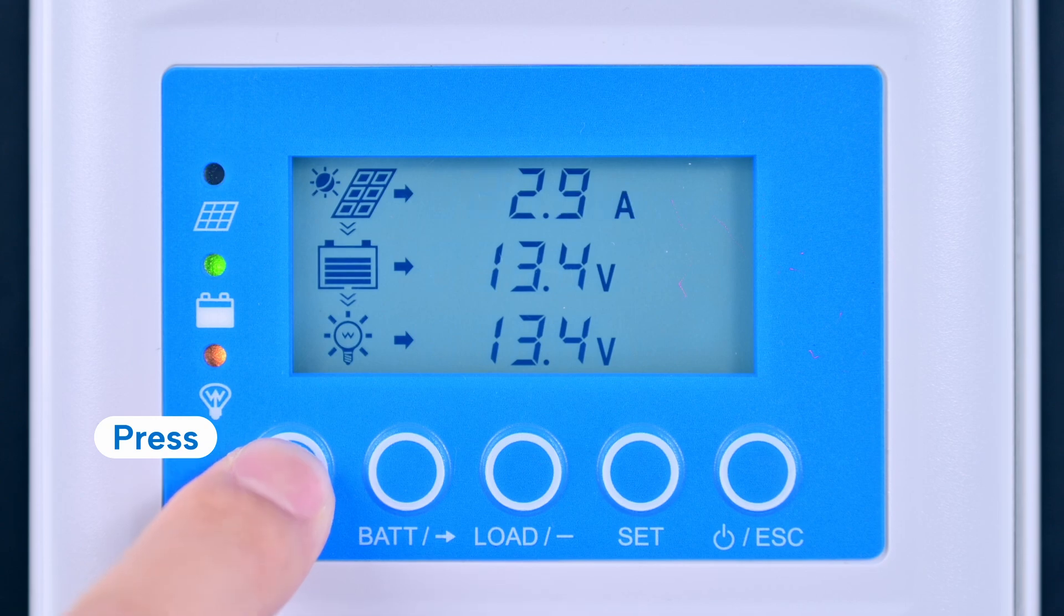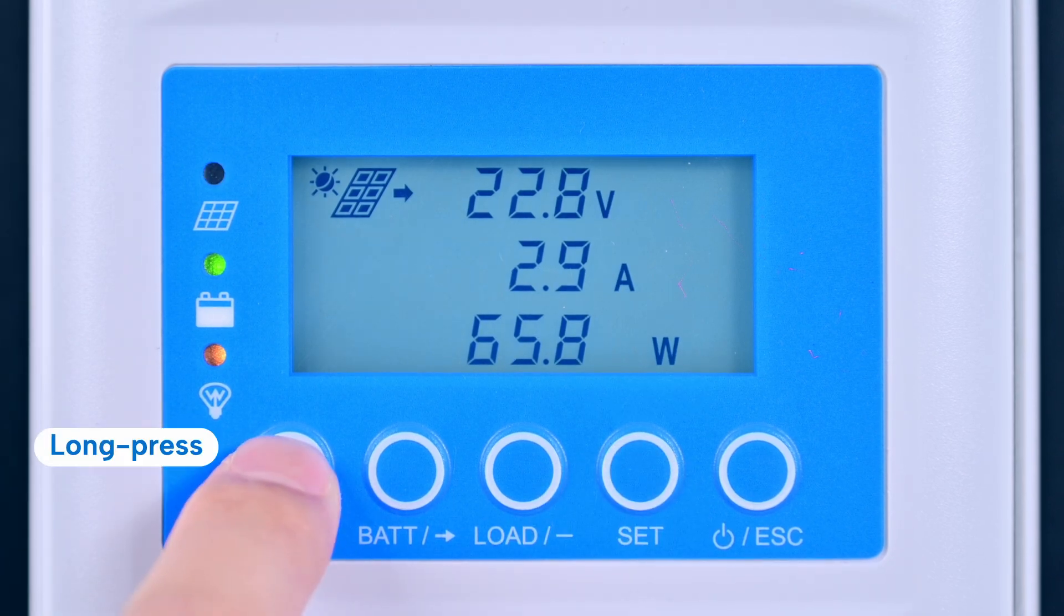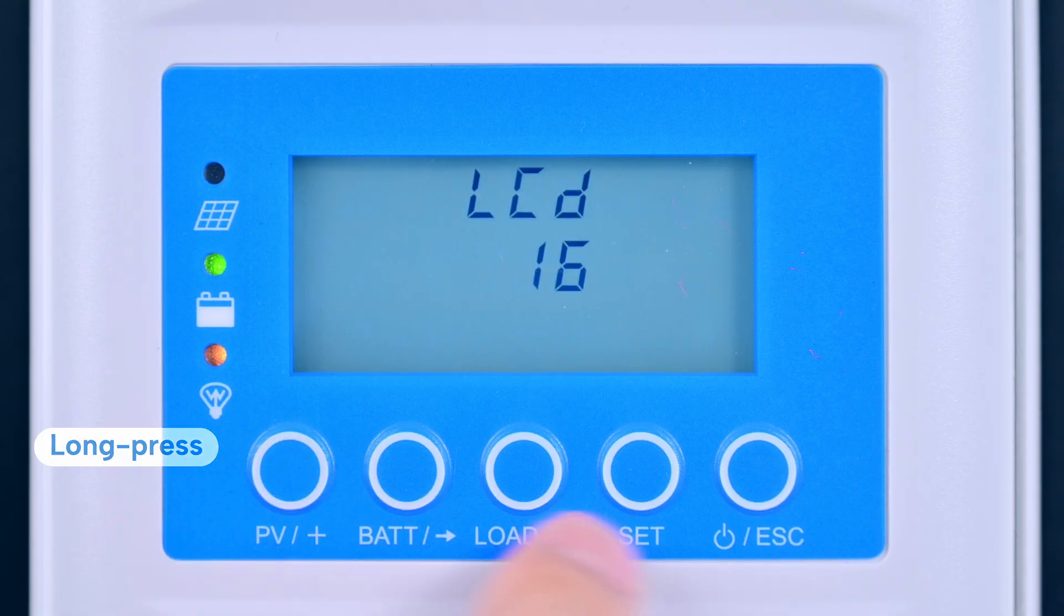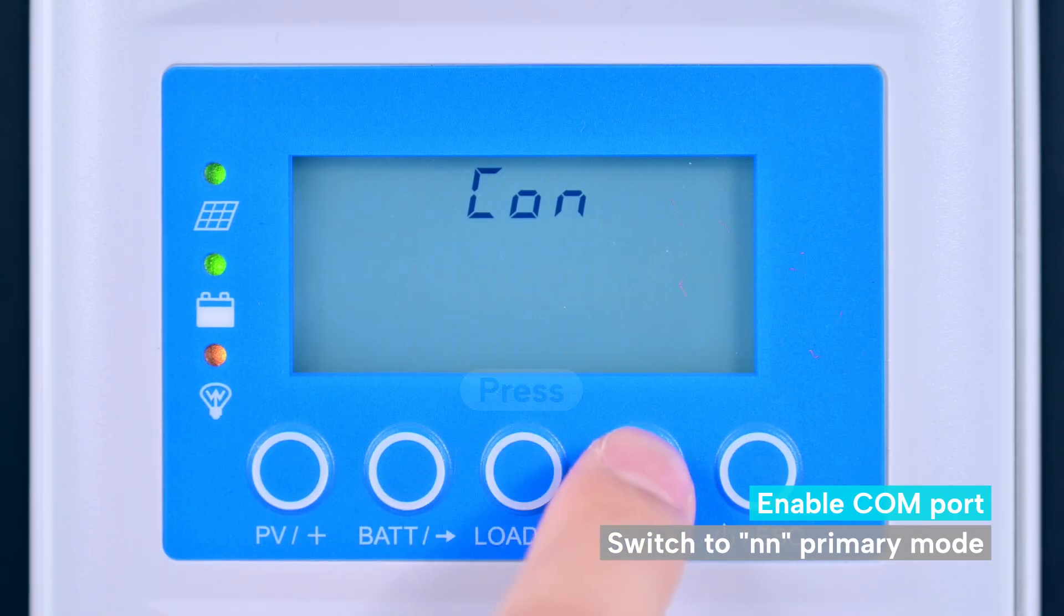Let's get started. Press PV plus and enter to browse PV parameters. Then, long press the PV plus to enter the settings. Enable the COM port and switch the device to n-n primary mode.